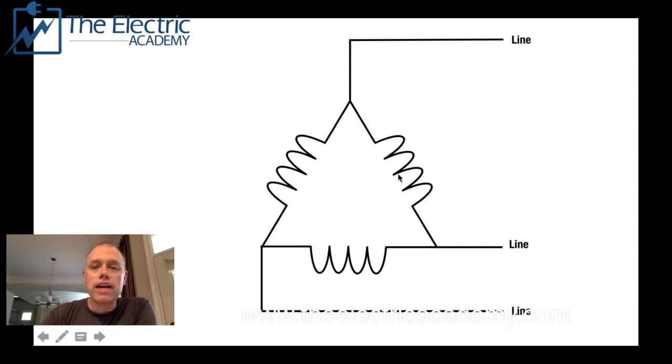Now this is the delta system. The delta system is a bit different than the Y in the fact that if you notice line to line here, it's just across a phase. So your line and your phase voltage are the same voltage. So if this is 120 volts, your line to line is 120 volts. So there's that.